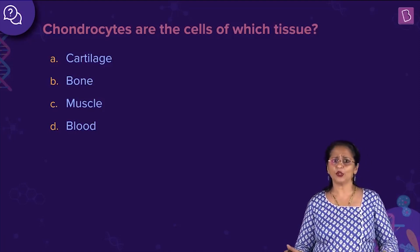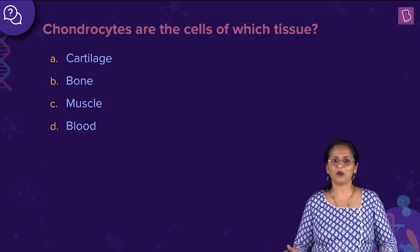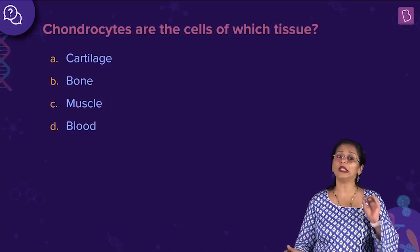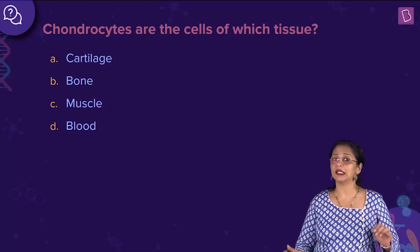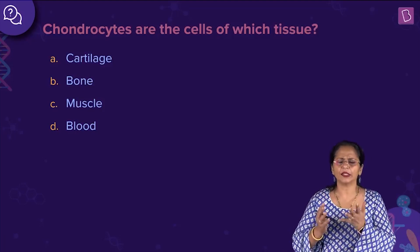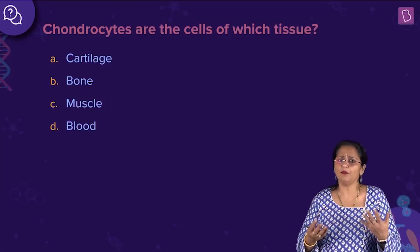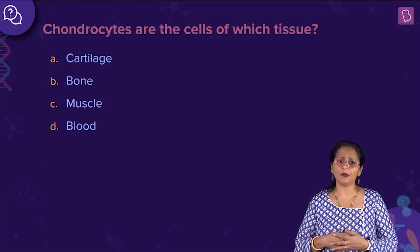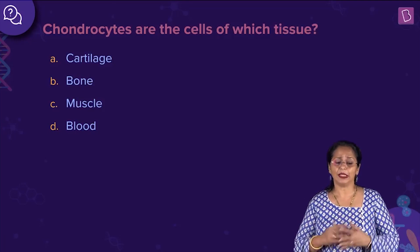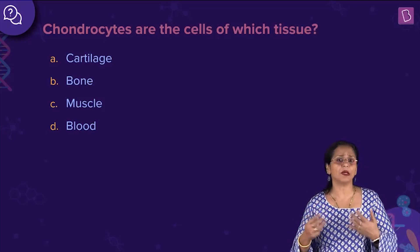Let's first look at what each one is made up of. Cartilage and bone are both a special type of dense connective tissue. They help in protecting the organs inside, provide structural framework, give shape to the organism, protect internal organs, and help in movement by coordinating with muscles.